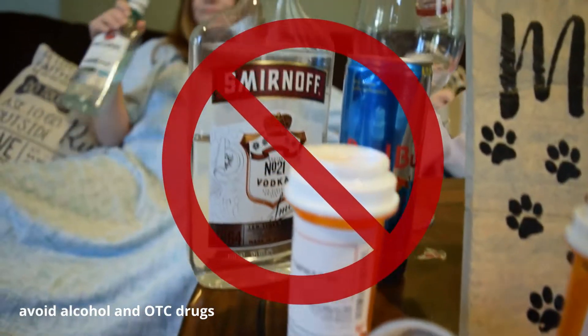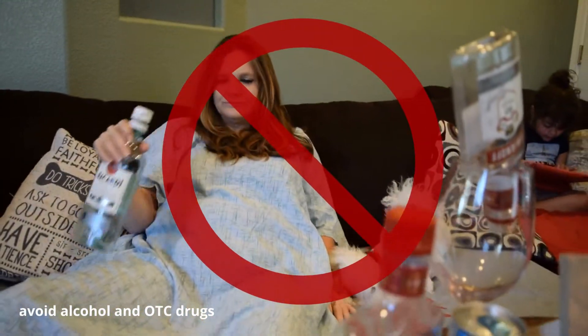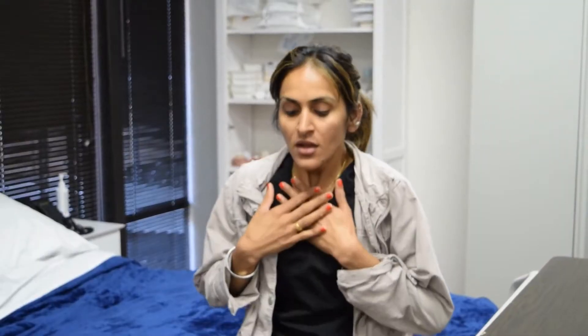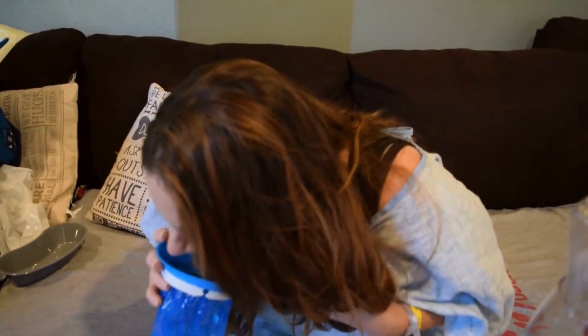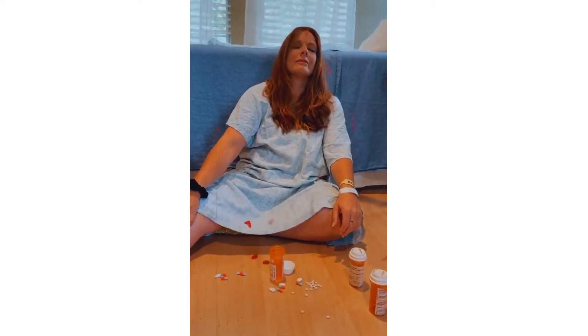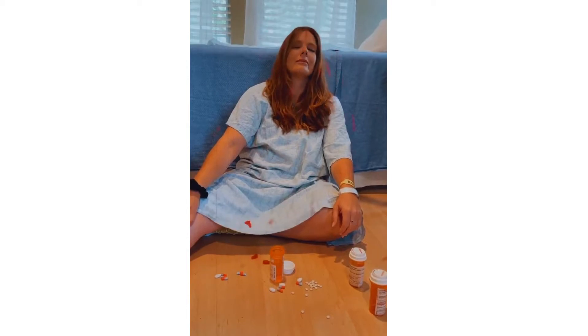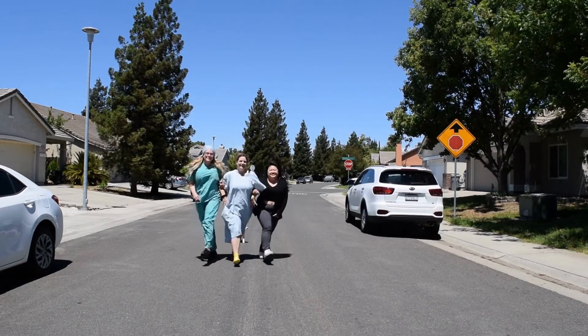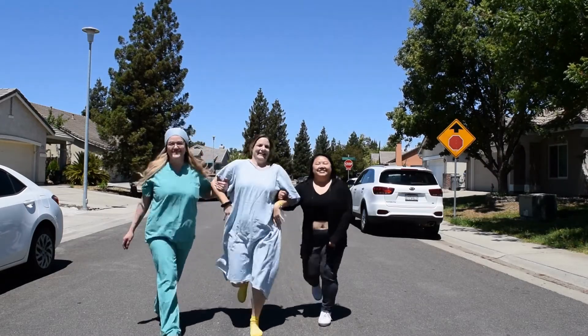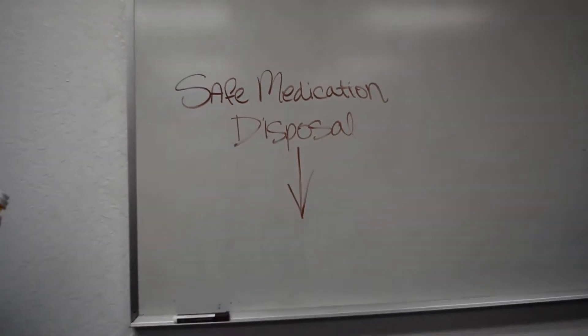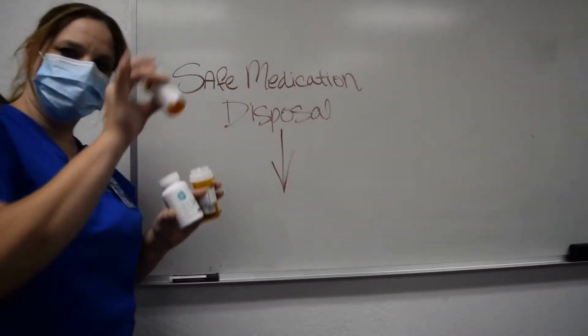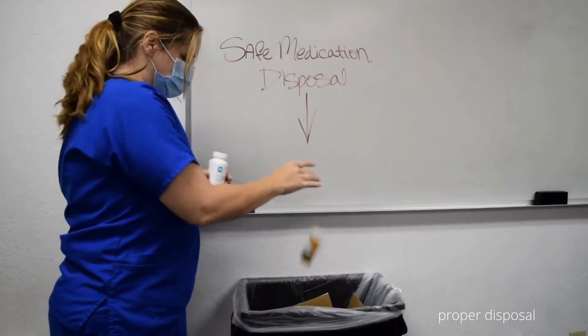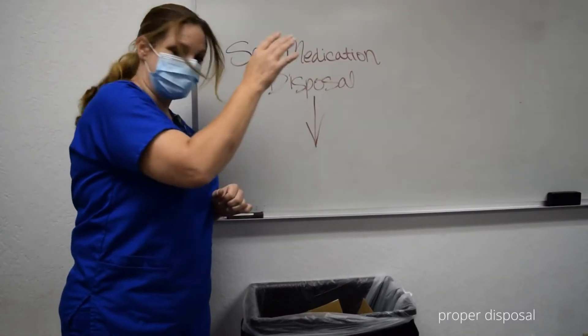Avoid alcohol and over-the-counter drugs unless the prescriber approves. Report constipation, difficulty breathing, severe nausea, and vomiting. In the event of an opioid overdose, use an opioid antagonist like Narcan. Advise patients to flush any unused drug down the toilet or take proper disposal when the drug is no longer needed.